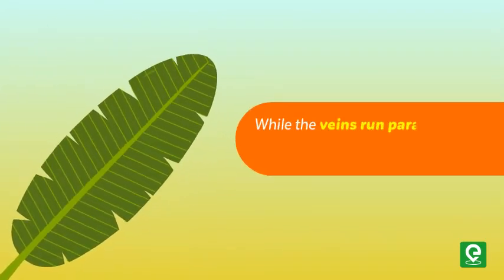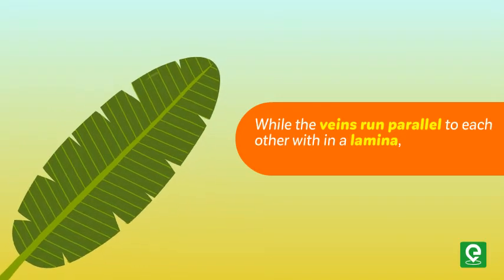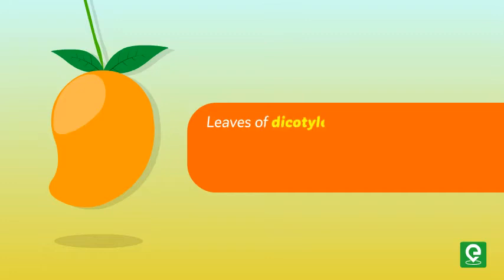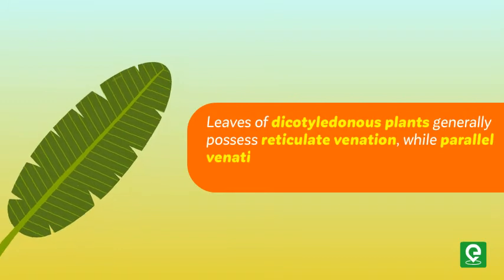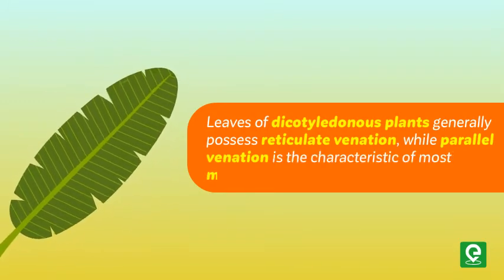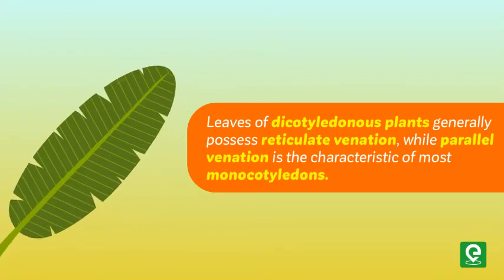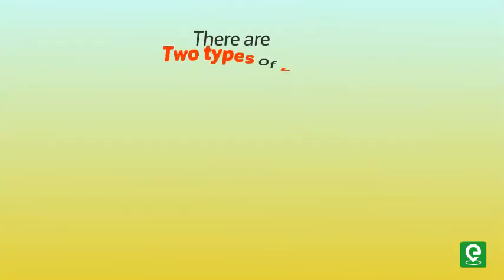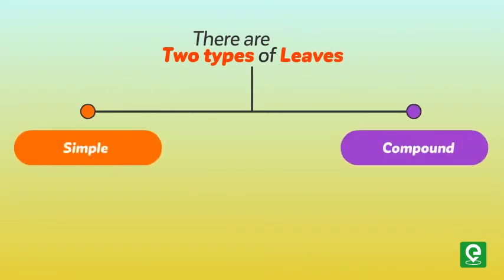When the veinlets form a network, the venation is termed reticulate, while when the veins run parallel to each other within a lamina, the venation is termed parallel. Leaves of dicotyledonous plants generally possess reticulate venation, while parallel venation is the characteristic of most monocotyledons.